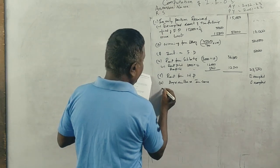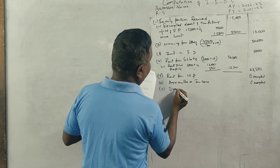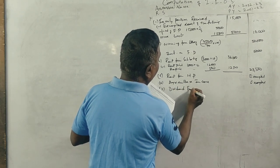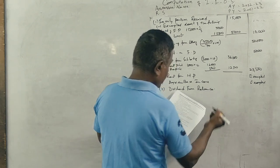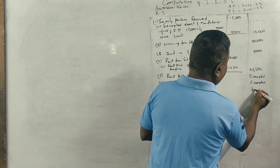Dividend from Reliance company, 7,000, fully taxable.